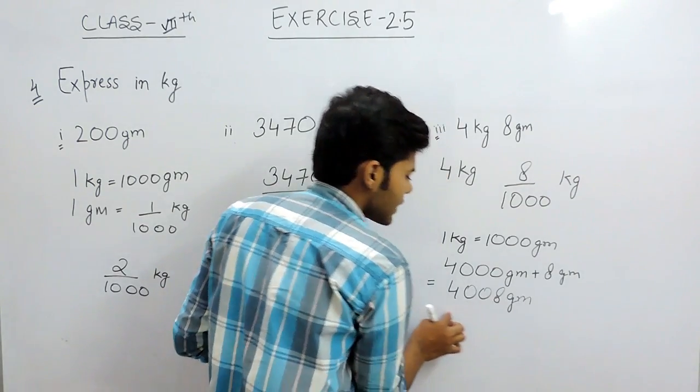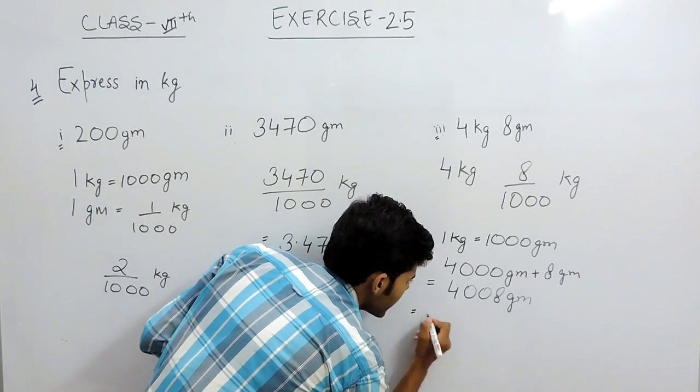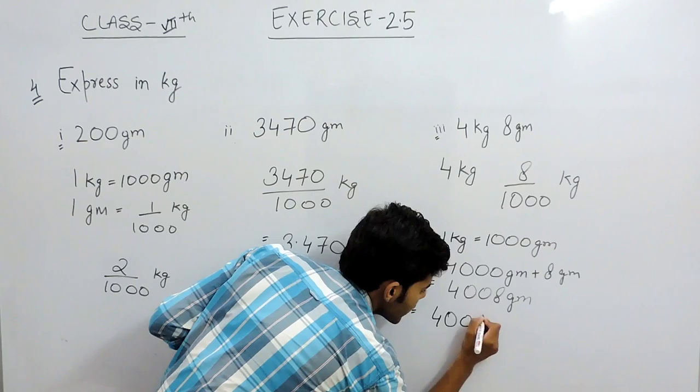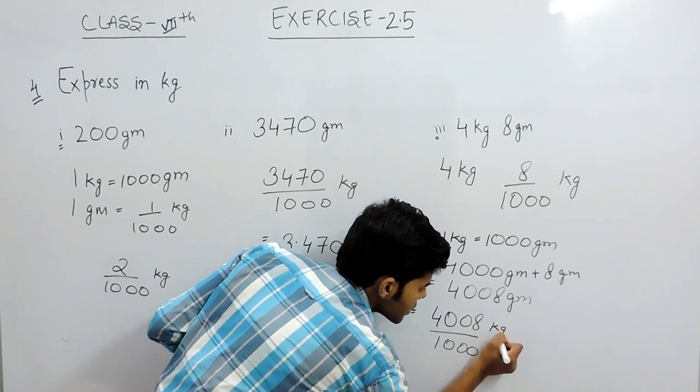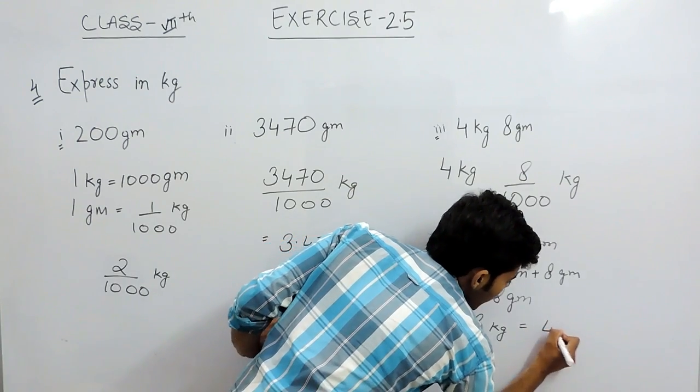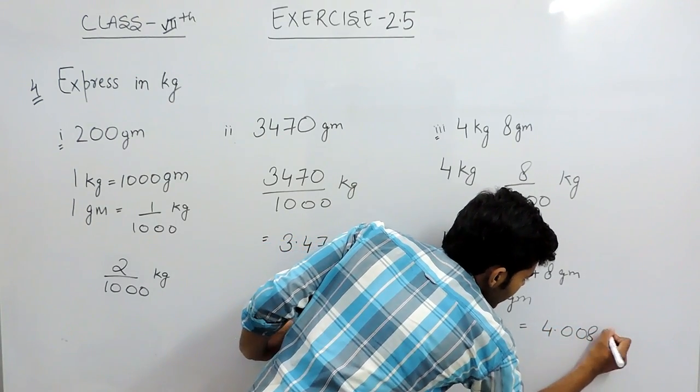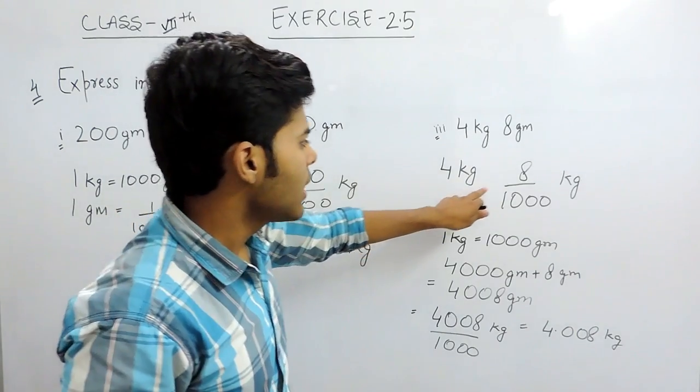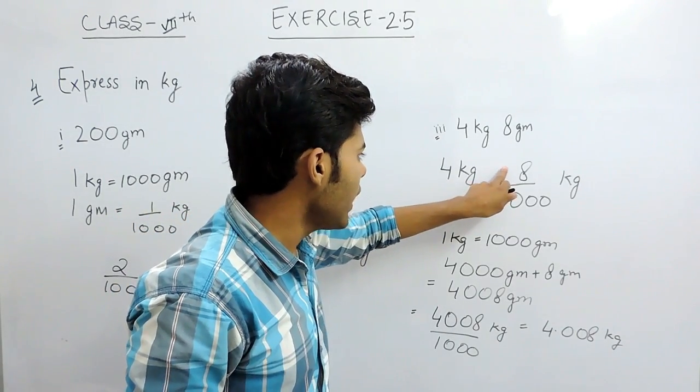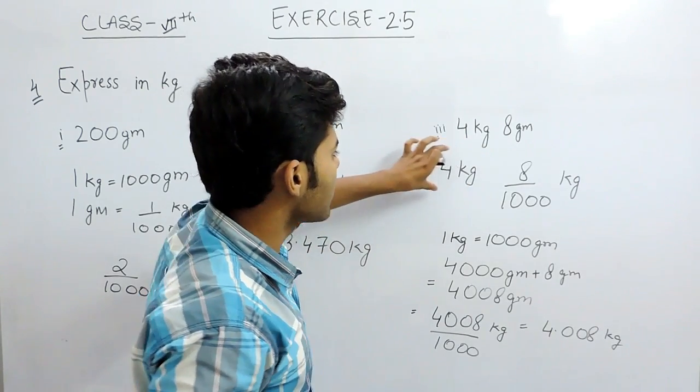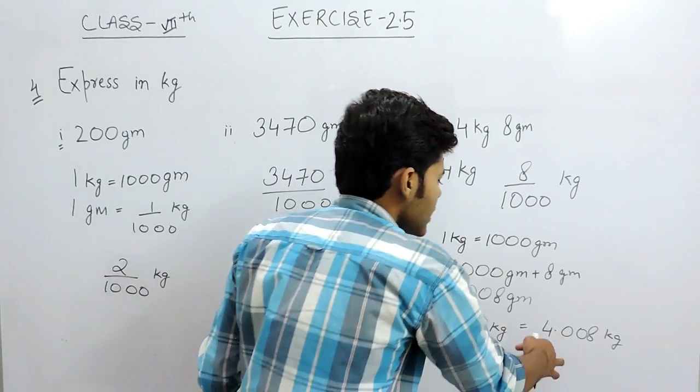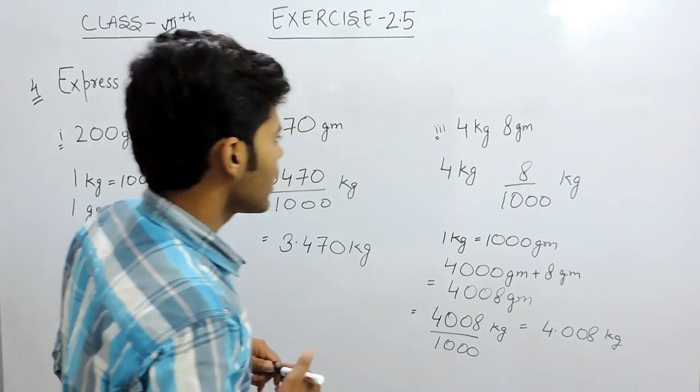And now, we can convert this in kgs. So, it will be 4008 by 1000 kg and it will be 4.008 kg. This will also give us 4.008.